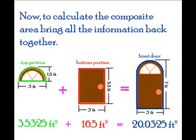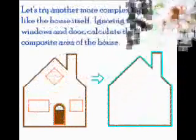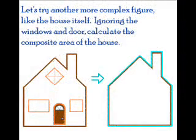Now, to calculate the composite area, bring all the information back together. The top portion plus the bottom portion equals the full front door. Let's try another more complex figure, like the house itself.